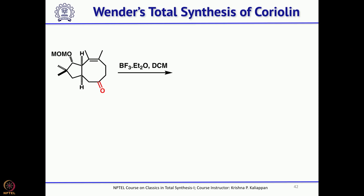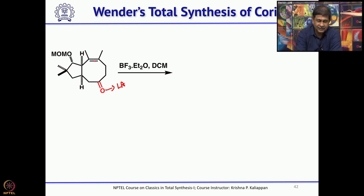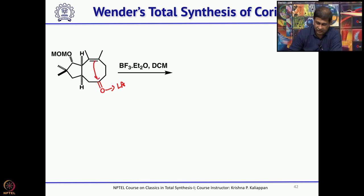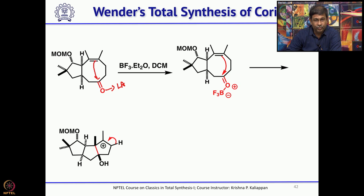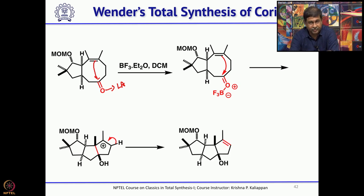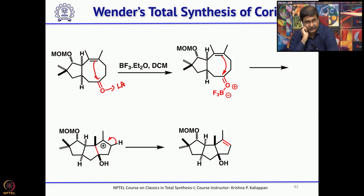You then treat with BF3·Et2O. BF3 coordinates to the ketone, the adjacent double bond migrates and loses a proton after carbocation formation, giving this product. Now you have obtained the linear triquinane skeleton.